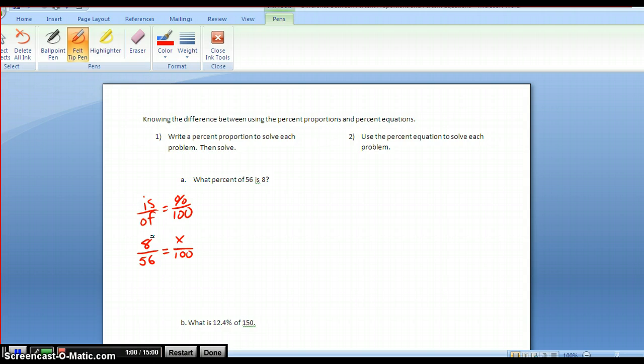Doing the very same problem, I'm reading the sentence from left to right again, but now using the percent equation. When I see the word what percent, immediately I put an x for the word what. Of 56—of means times, so parentheses 56. Is means equals, and 8.